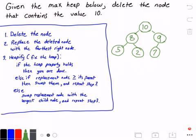Let's go ahead and get started. The very first thing that we want to do is step one, where we delete the node that contains the value 10 in the tree. So let's go ahead and do that now.